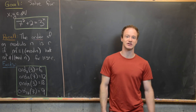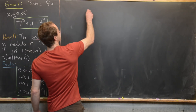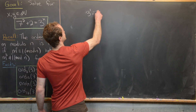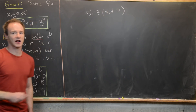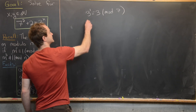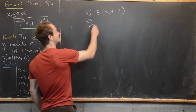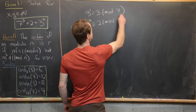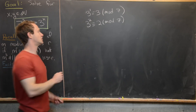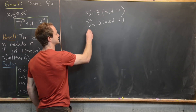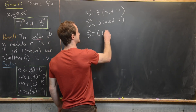Let's check the first one by repeated exponentiation. We know 3 to the 1 is just 3 mod 7, which is clearly not congruent to 1. Then 3 squared equals 9, which is congruent to 2 mod 7. Multiplying both sides of this congruence by 3 gives us 3 cubed is congruent to 6 mod 7.